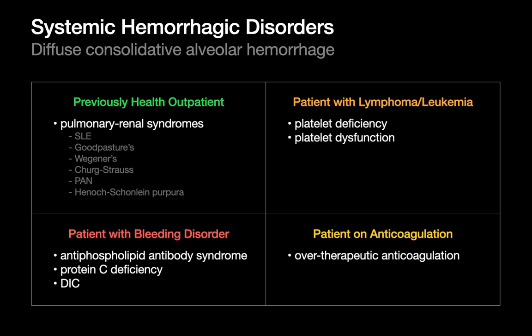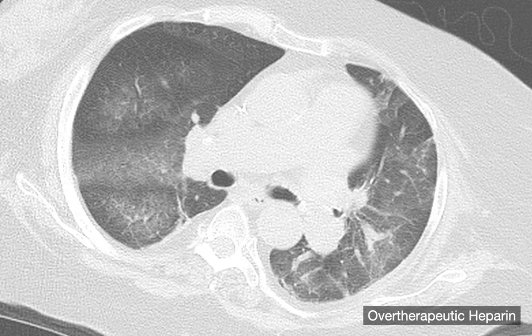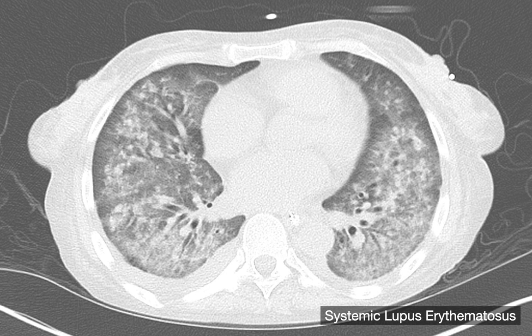If entertaining a systemic hemorrhagic disorder presenting as diffuse alveolar hemorrhage, categorize the patient into one of four groups: if previously healthy, think pulmonary-renal syndrome; if the patient has lymphoma or leukemia, think platelet issues; if there's a bleeding disorder, consider that; and if the patient is anticoagulated, consider over-therapeutic anticoagulation. Here's an example of diffuse hemorrhage — this case is more ground glass, representing a moderately severe case where the airspace opacities are slightly denser.